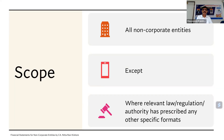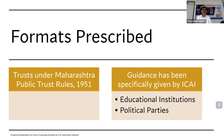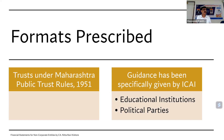An example of this exception: under the Maharashtra Public Trust Rules 1951, trusts registered under that law have a format prescribed under that law. Similarly, our institute has released guidance notes on how to maintain accounts for a school and for political parties — there is a separate ICAI publication for financial statements of political parties and schools.